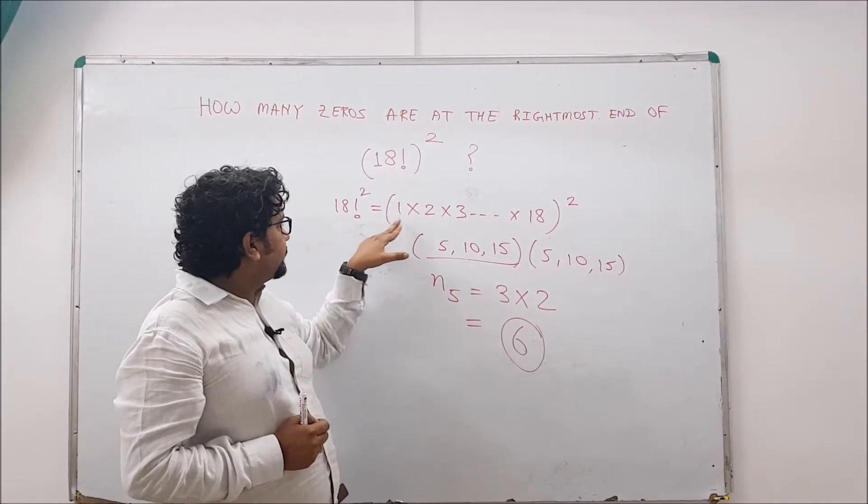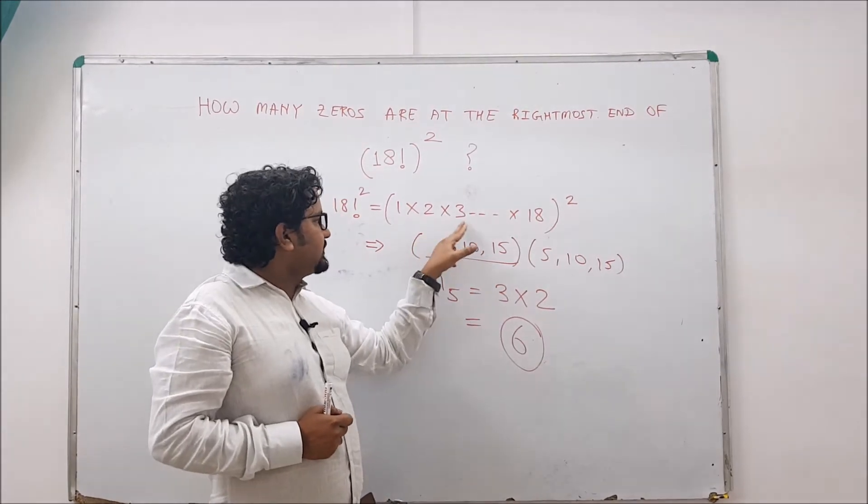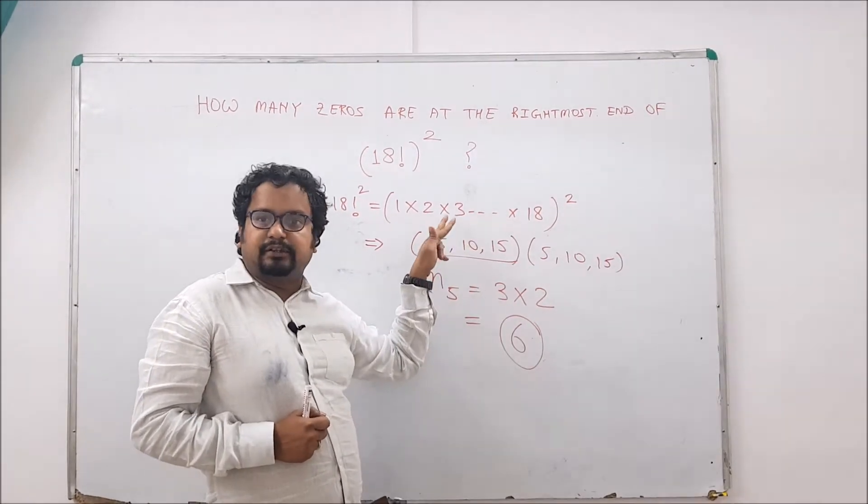18 factorial means products from 1 to 18, and we are squaring it. So to get zeros, we need 5s multiplied by 2.